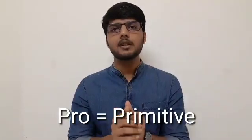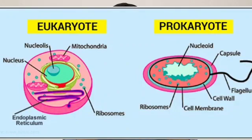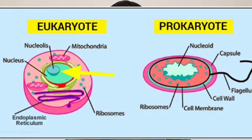'Pro' means primitive, and 'karyotic' means nucleus. So there will be a primitive nucleus — there will be no boundary of the nuclear membrane, meaning no organized nucleus in that cell. That is the prokaryotic cell. So prokaryotic cell means no nuclear membrane, and eukaryotic cell means a complete nucleus covered by the nuclear membrane.